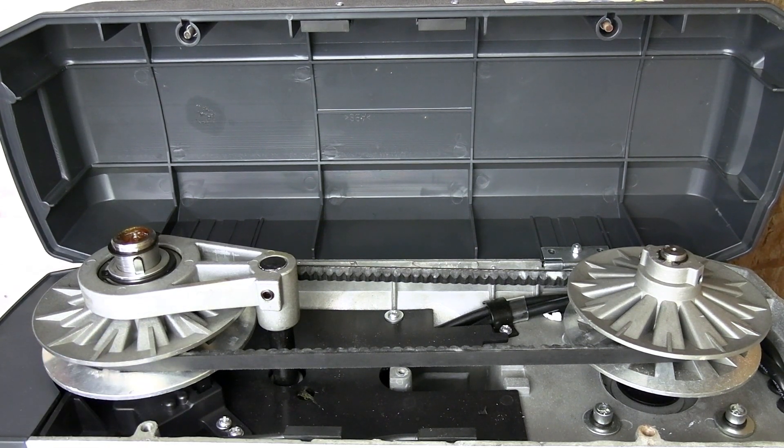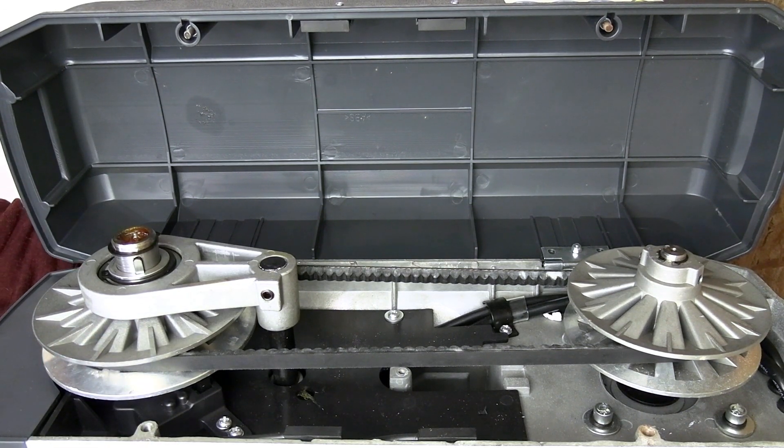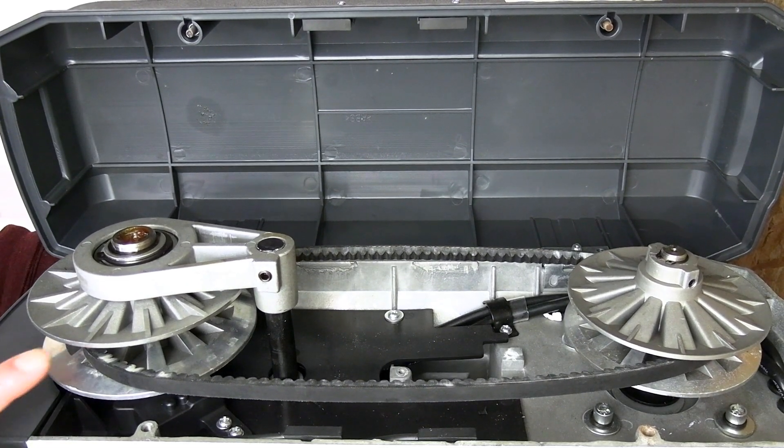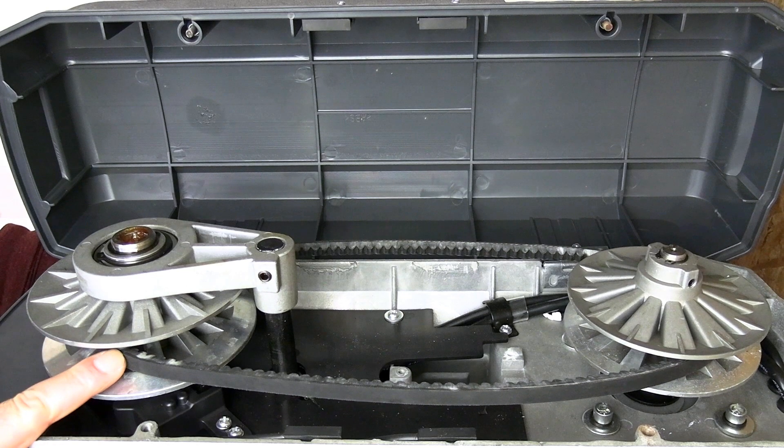When I turn the lever to increase the speed, this actuator, I don't know what to call it, goes up, opening the chuck pulley, and thus decreasing its diameter.